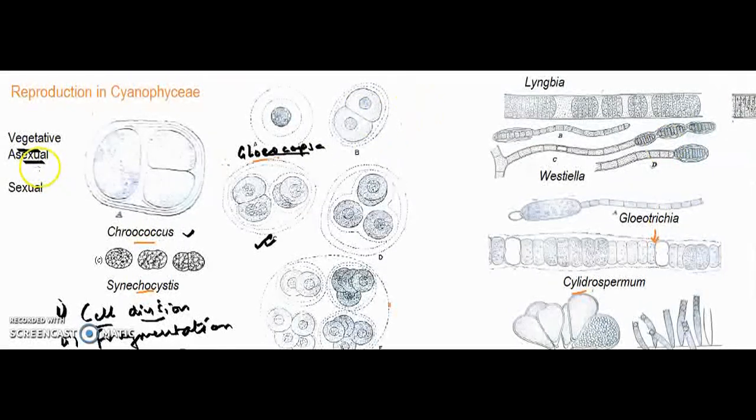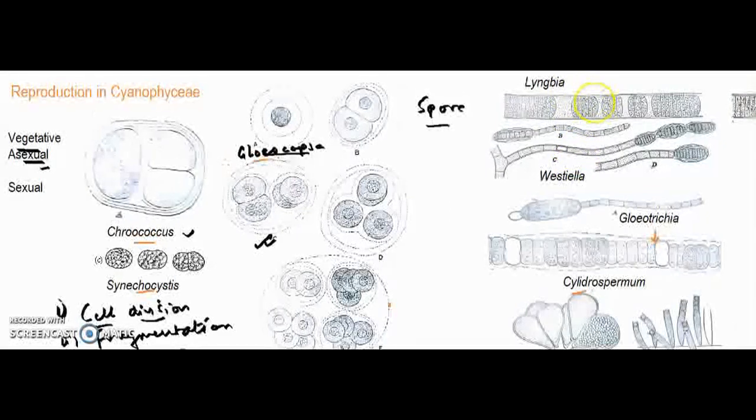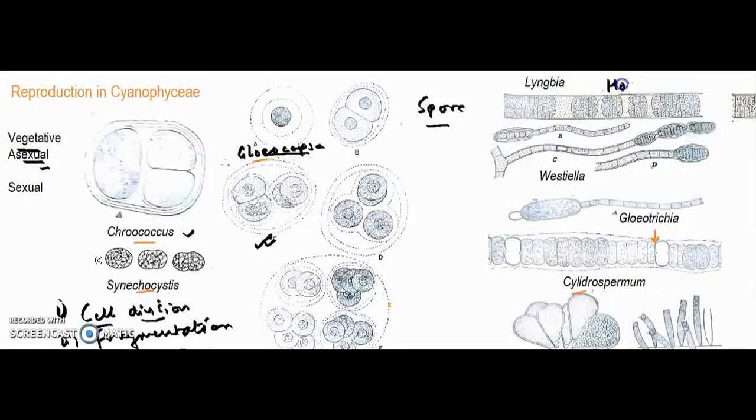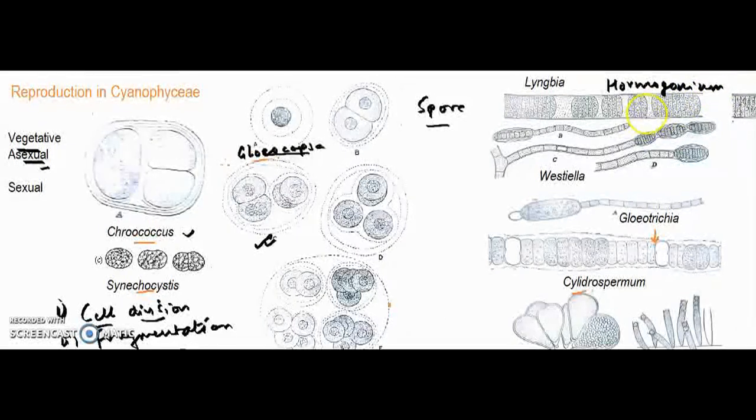Different types of asexual reproductive structures or spore-like structures are formed in Cyanophyceae. The most common is called the hormogonium, with hormogonia as the plural.